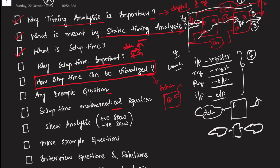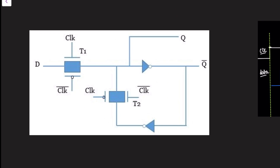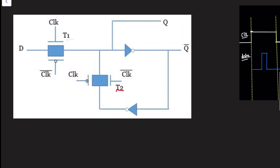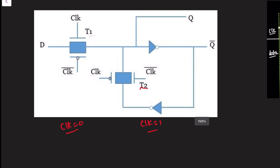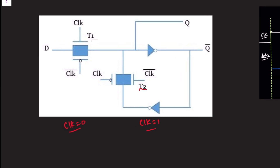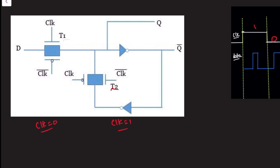From here we will continue. To analyze setup time we need to go internal to the flip-flop. To save time, I have a snippet of a latch. We are going to see whether it's a positive latch or negative latch in a while. This is a latch with a transmission gate. T1 is one transmission gate, T2 is another transmission gate, and these two are inverters. This is Q and this is Q-bar. Let's see two scenarios where the clock is zero and the clock is one.